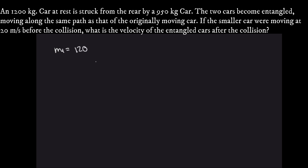First, M1 is the first car with a mass of 1200 kg, and M2 is the second smaller car with a mass of 950 kg — remember, this is the moving car. The velocity of the first car, V1, is 0 m/s because the question mentions the first car is at rest. The velocity of the second car, V2, is 20 m/s as mentioned in the question.